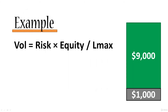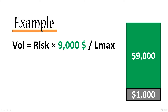So we have $9,000 of equity on our account and we want to calculate the volume for our next transaction. The volume is given by the Larry Williams formula: Risk times Equity divided by LMAX. Equity we can plug in right away — $9,000.